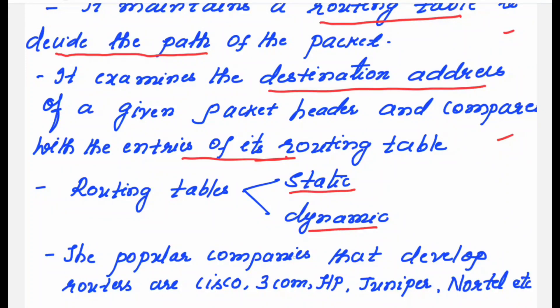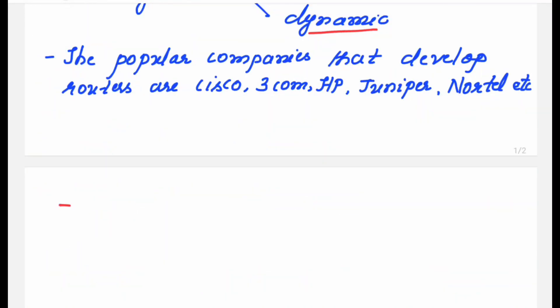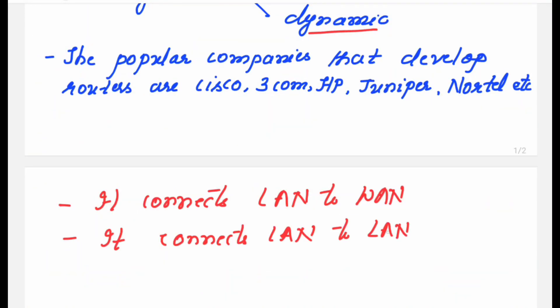Routing tables are of two types — one is static and another is dynamic. One more point to add here is that the router connects LAN to WAN.